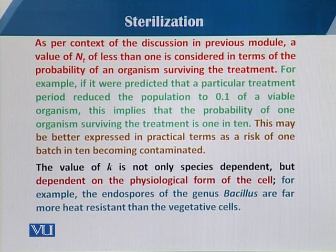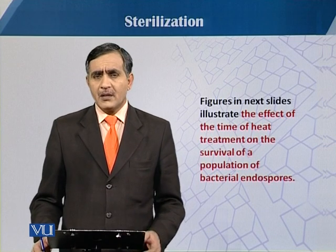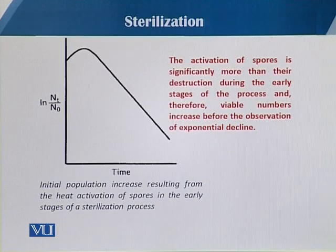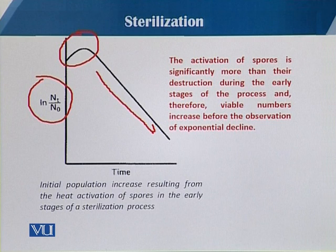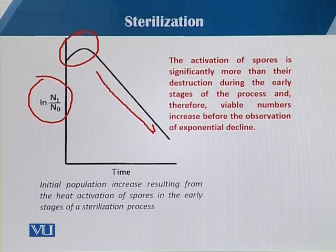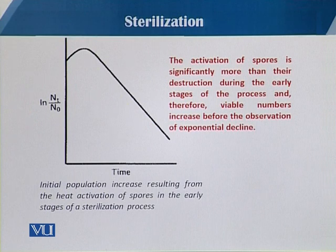In the next slide you can see a figure showing how heat treatment affects the survival of a bacterial endospore population. In this slide, the plot is drawn between the log of Nt over N-naught against time. There is an initial rise and then the graph goes down. This initial population increase results from the heat activation of spores in the early stage of sterilization, because when there is more heat, endospores burst and start germinating. That is why there is an increase in survivors, as they are very heat resistant.